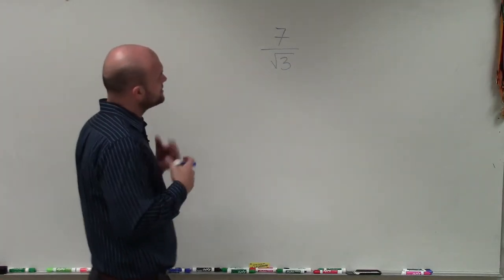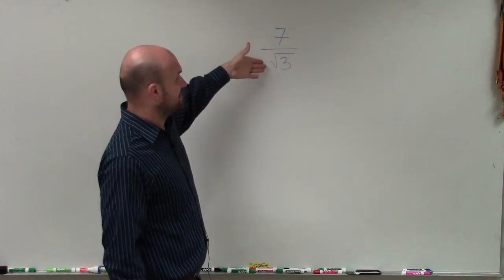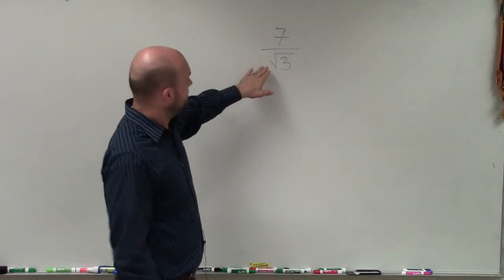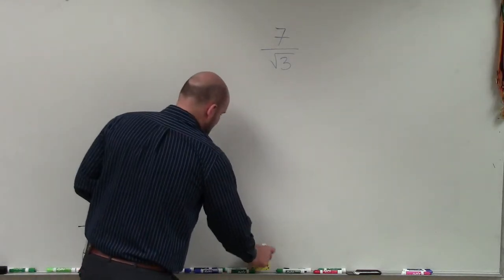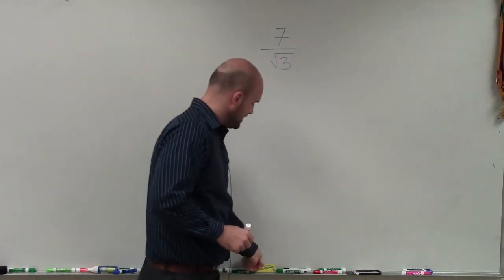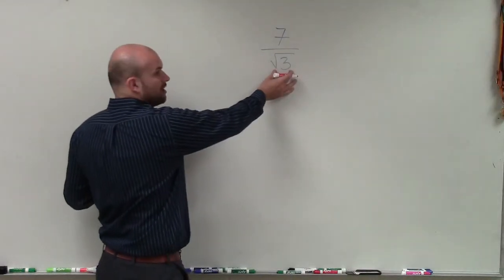What we're trying to do with rationalizing the denominator is get our denominator to not be a radical number. You can see here we have the square root of 3. So to undo that, we're going to multiply by the radical of our denominator again.